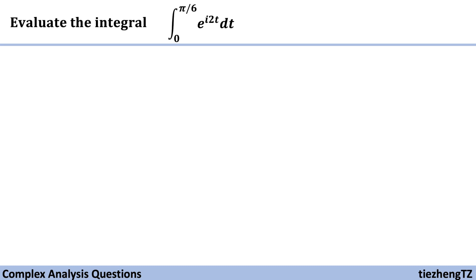Today's question is to evaluate the integral from 0 to π/6 of e^(i*2t) dt. We already introduced how to solve these questions about how to evaluate integrals, and you can refer to the previous videos to see the general procedure.